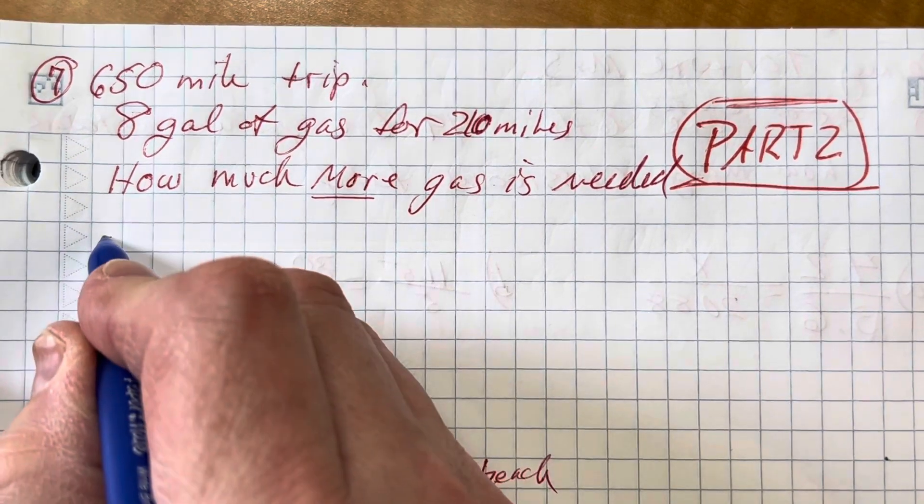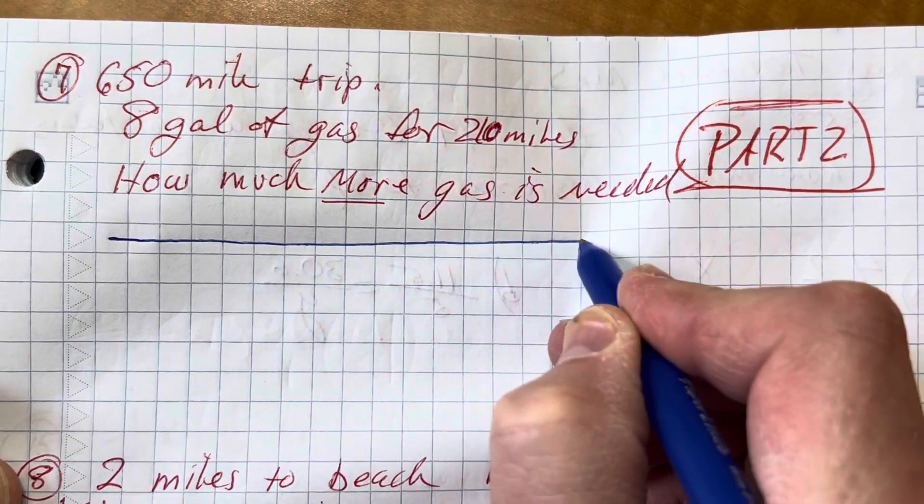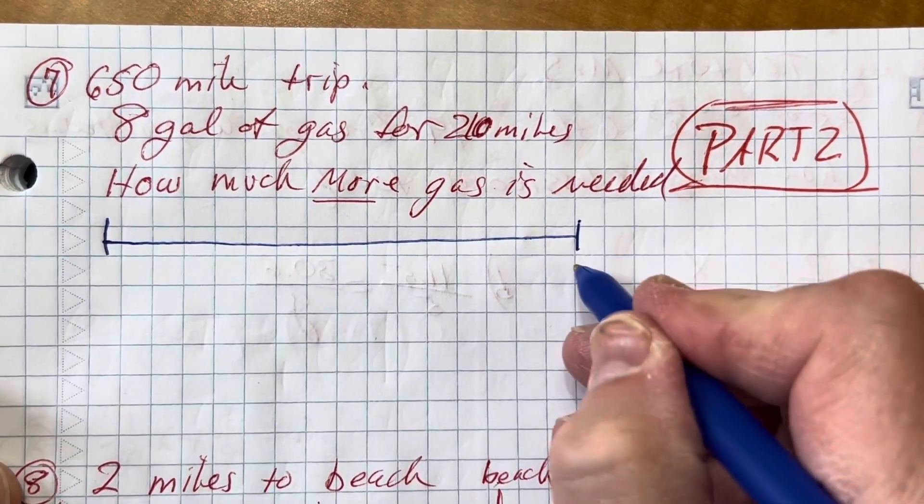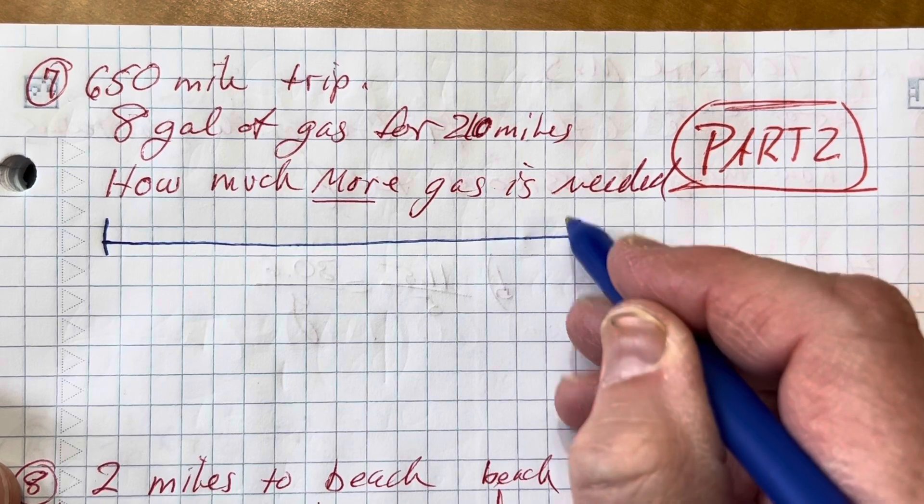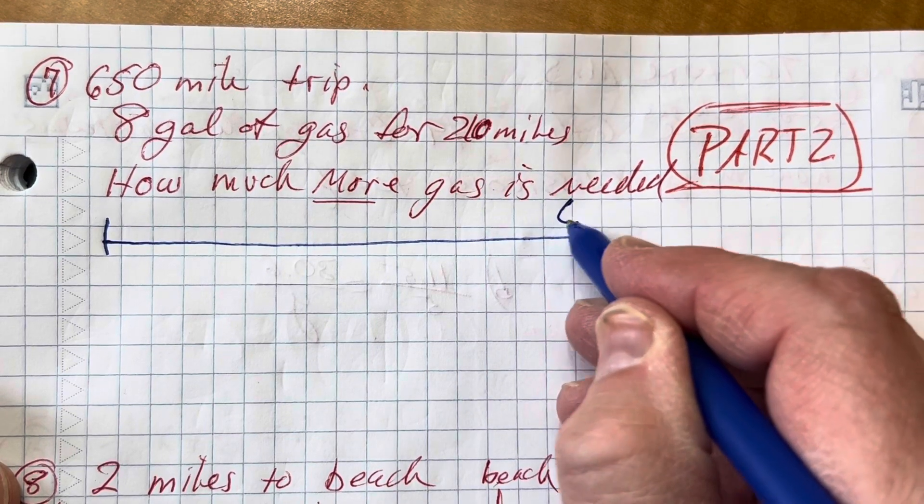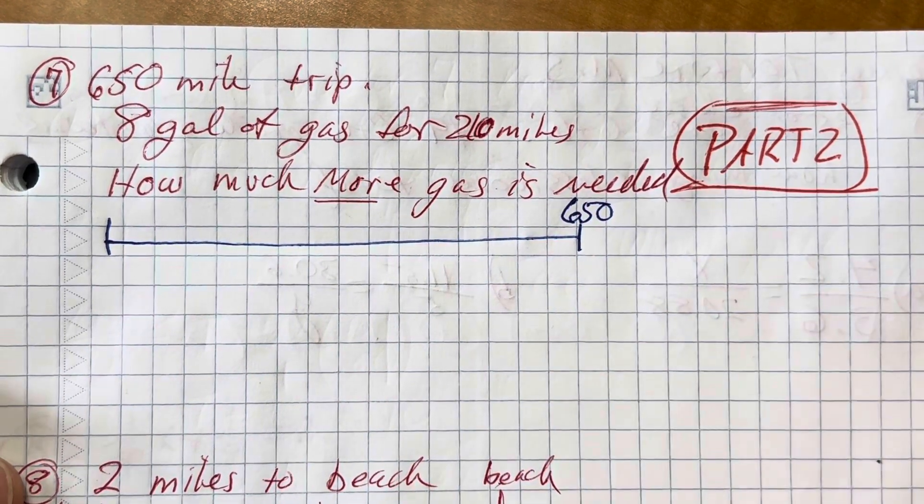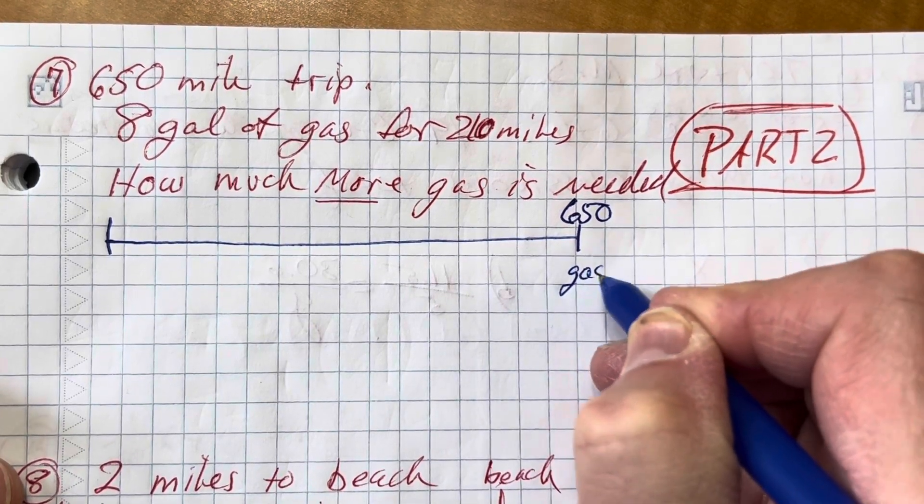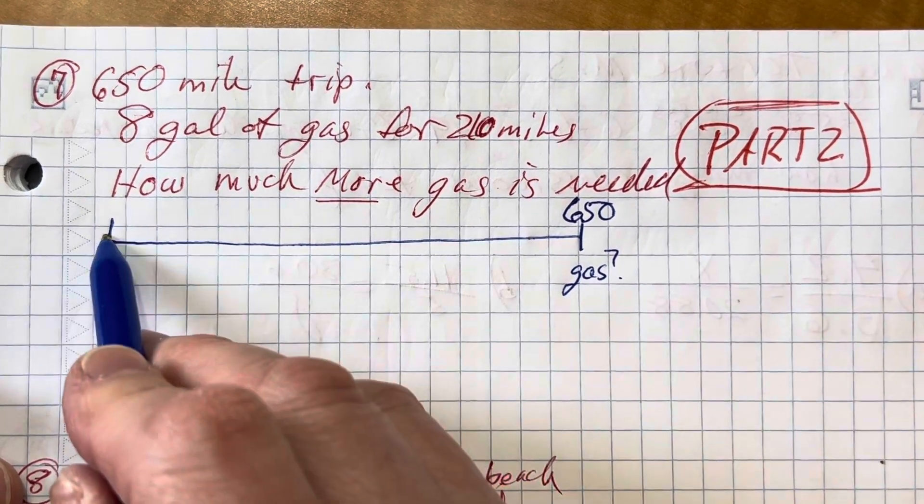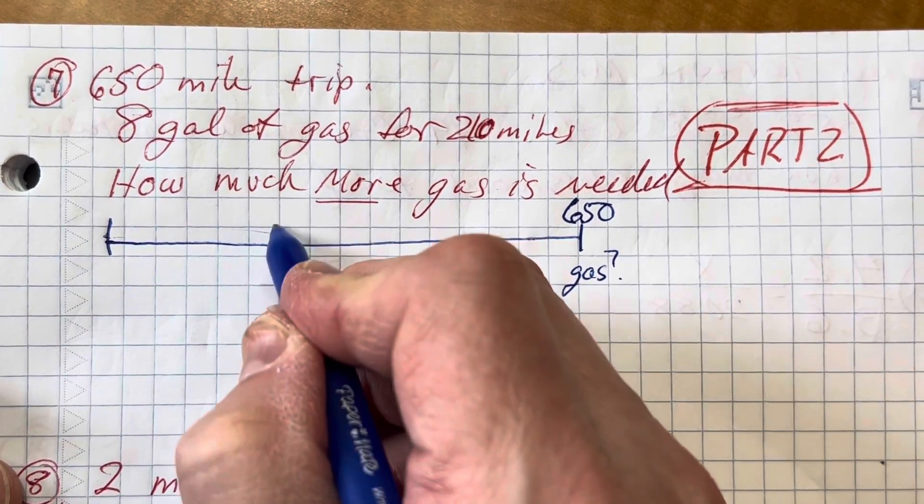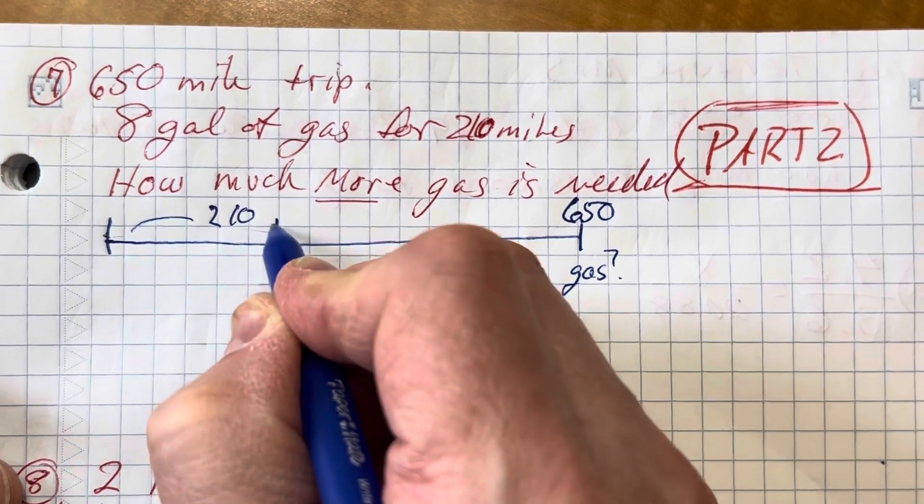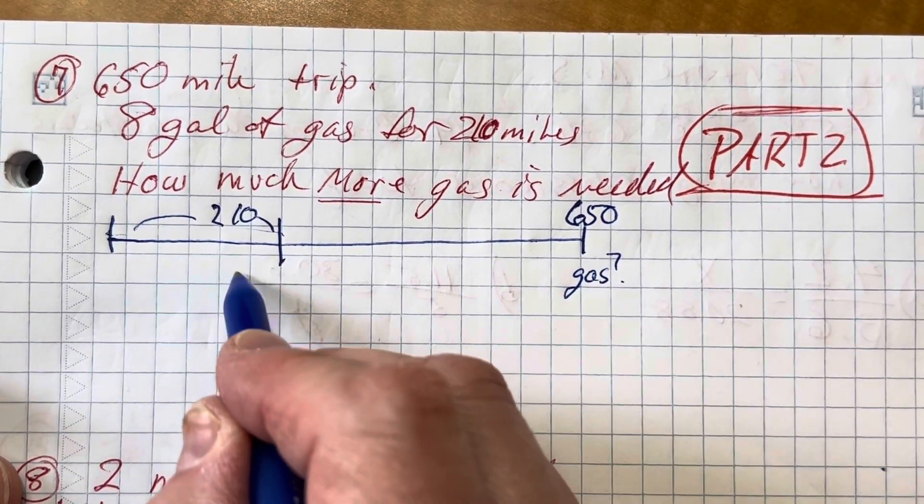Well, let's see. If I draw a linear model to help me understand that, I think that'd be a good idea. So I know I have a 650-mile trip. I'll put 650 up here. Gallons of gas, I don't know. But I do know that when I went 210 miles, I used eight gallons.